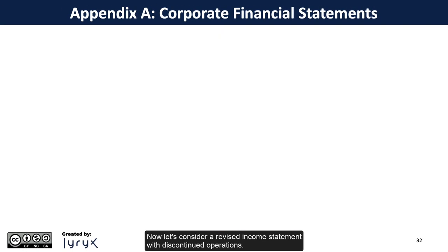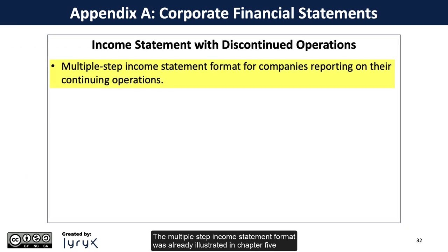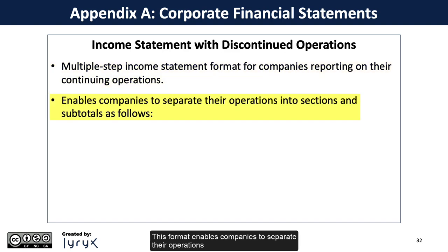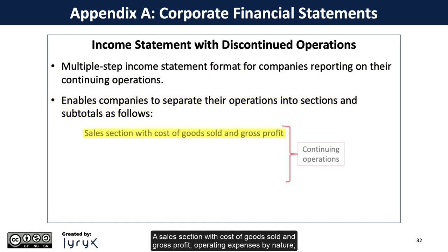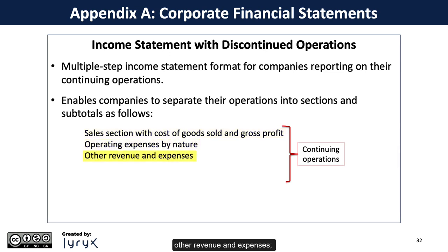Now let's consider a revised income statement with discontinued operations. The multiple-step income statement format was already illustrated in Chapter 5 for companies reporting on their continuing operations. This format enables companies to separate their operations into sections and subtotals: a sales section with cost of goods sold and gross profit, operating expenses by nature, other revenue and expenses, and income tax expense.